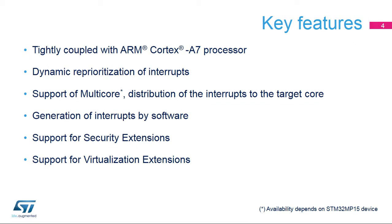The Global Interrupt Controller is tightly coupled with the ARM Cortex-A7 processor and provides a dynamic reprioritization of interrupt requests, allowing an application to better serve the incoming events. Most of the peripherals have a unique interrupt line, making the development of the application easier. No need to determine the source of an interrupt during the interrupt handling. In case of multi-core Cortex-A7 processor, each interrupt can be distributed to a single or both cores.